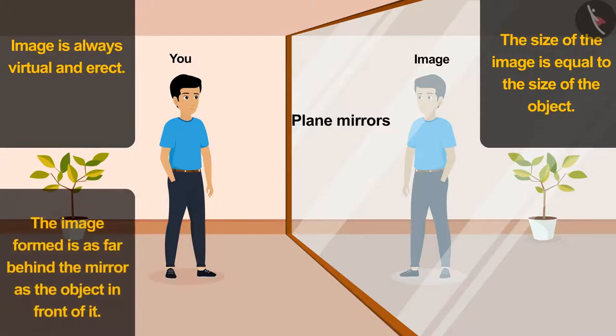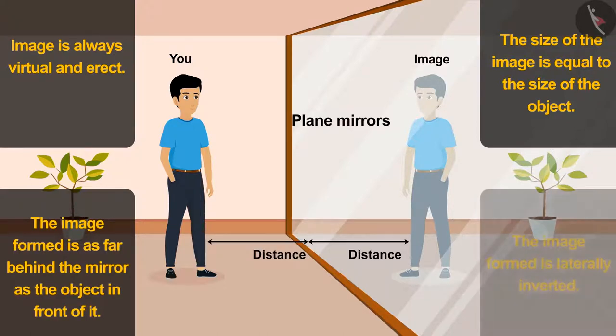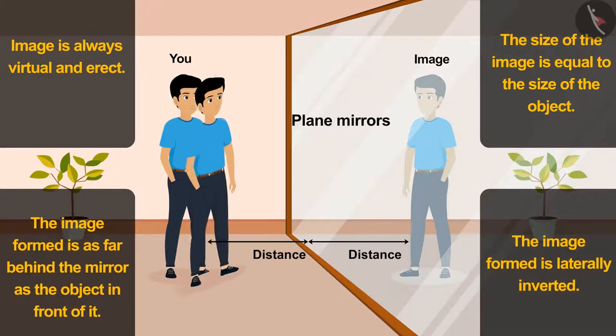Number 3: The image formed is as far behind the mirror as the object in front of it. Number 4: The image formed is laterally inverted.